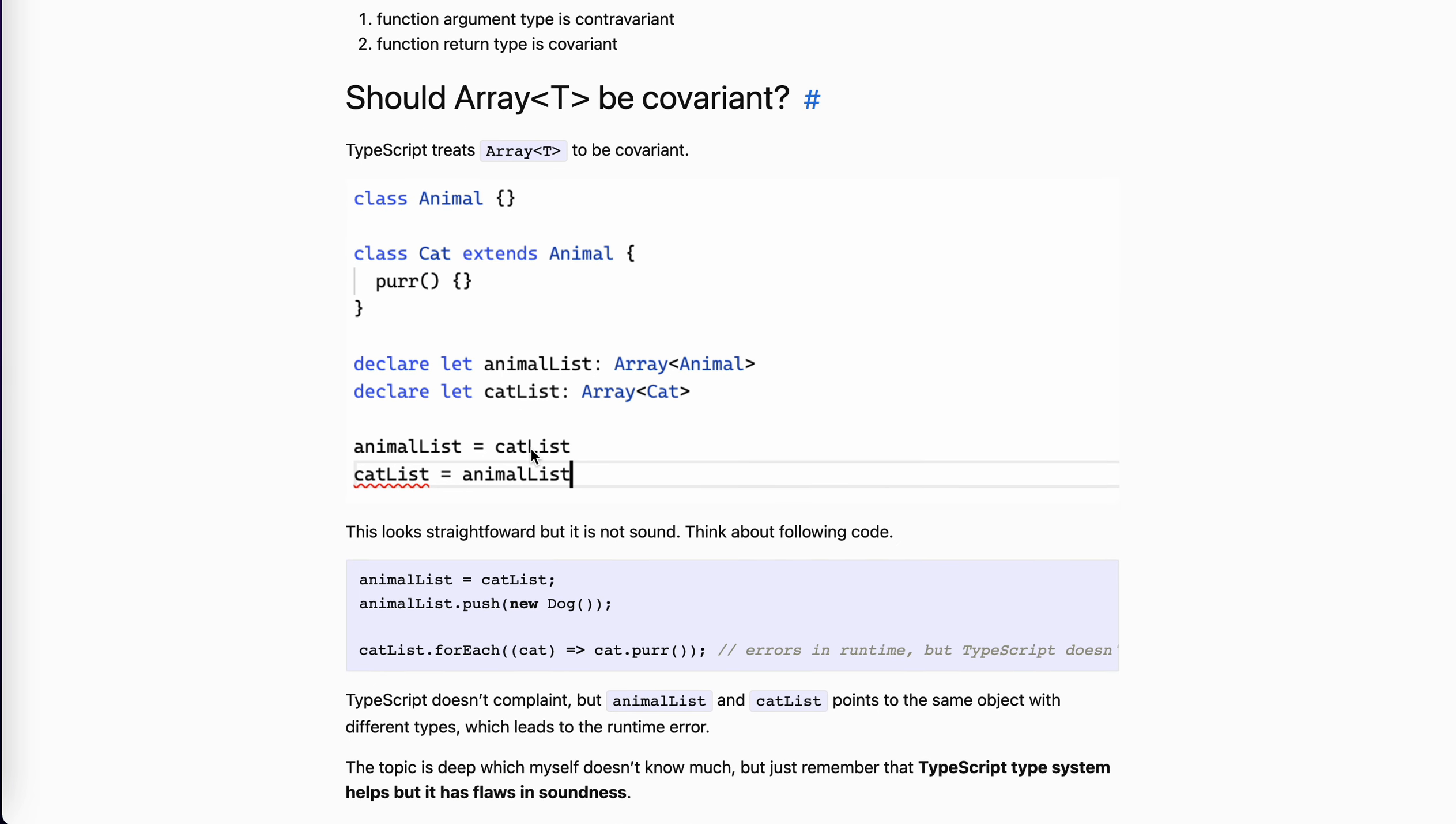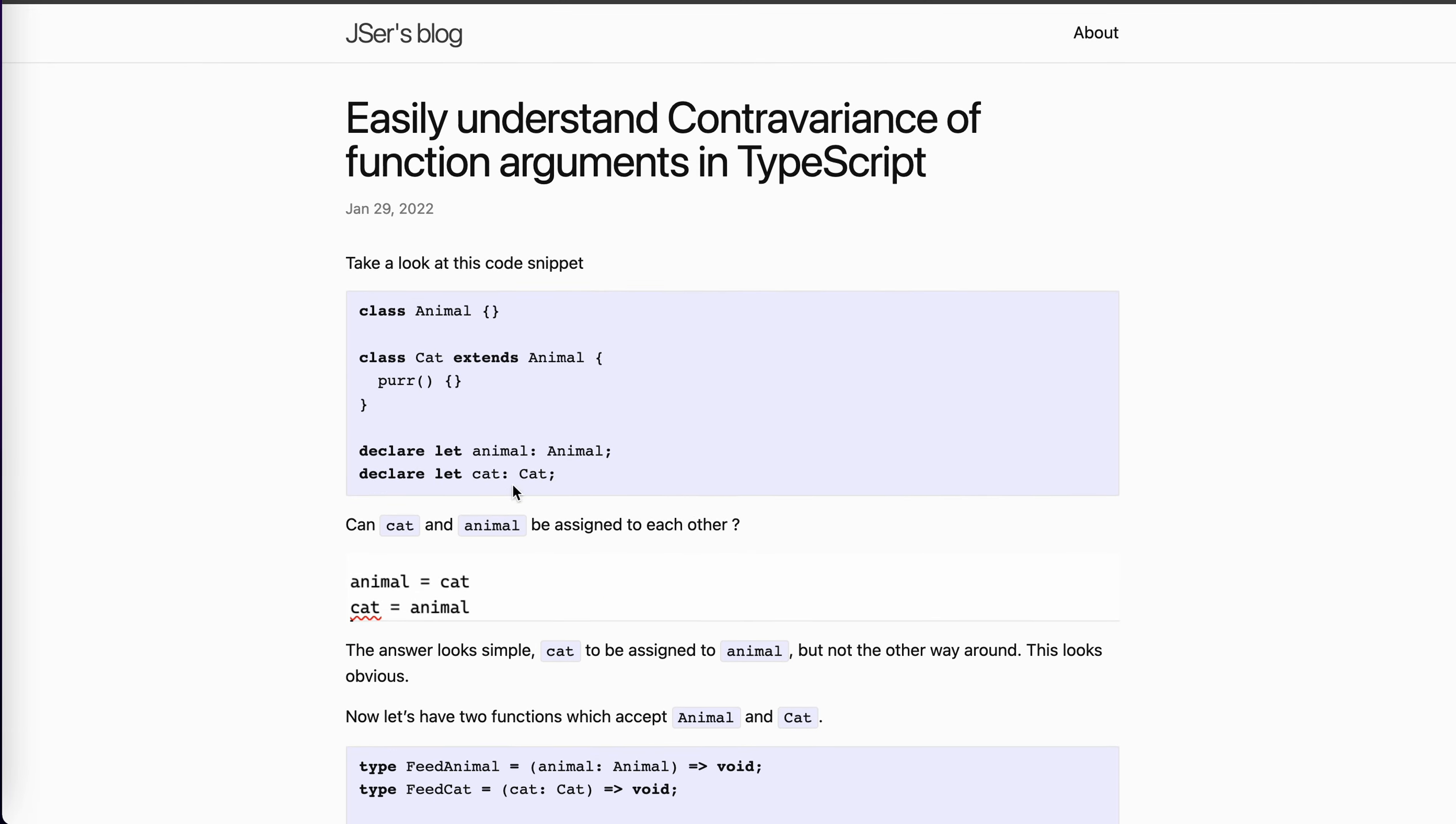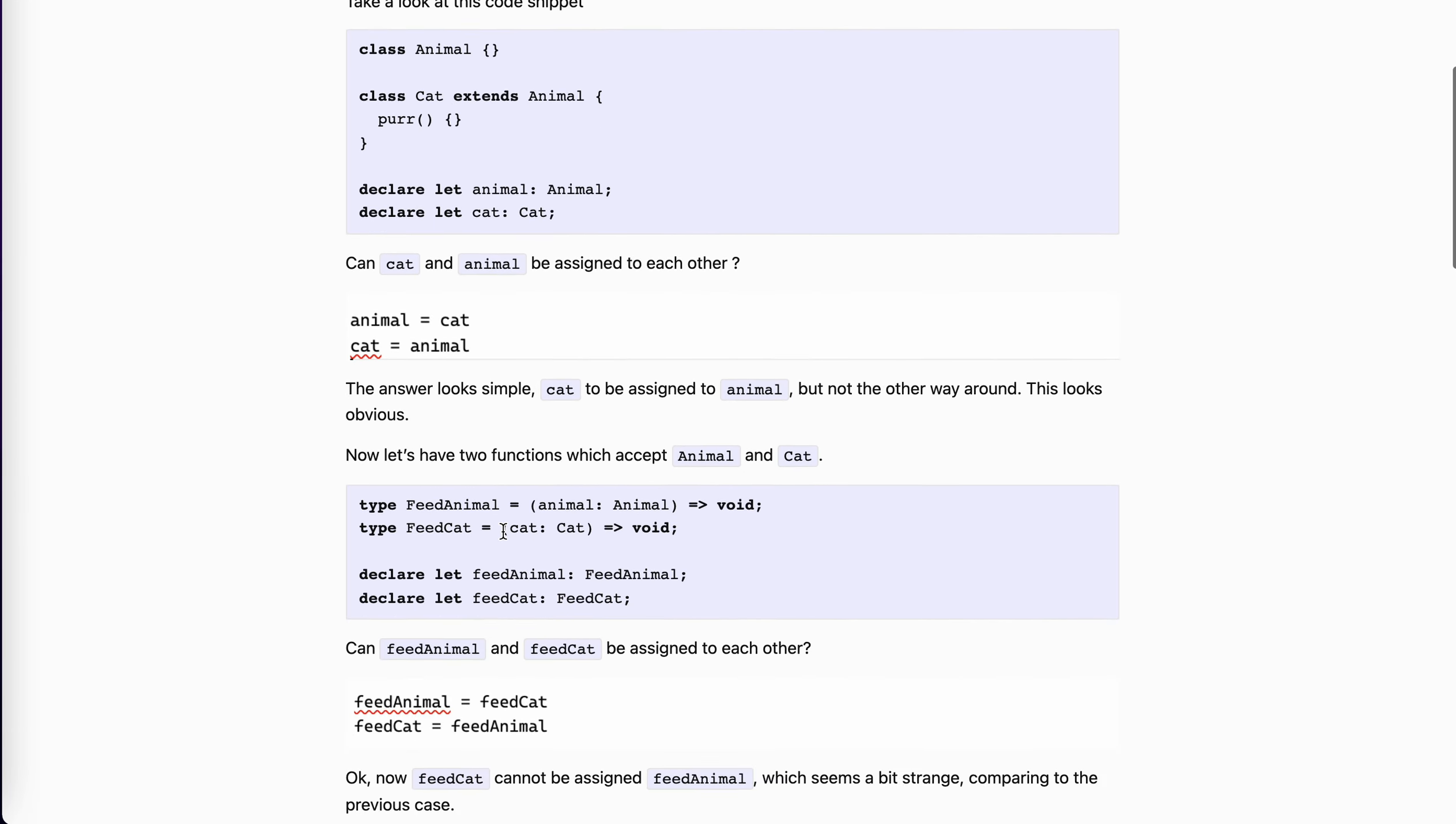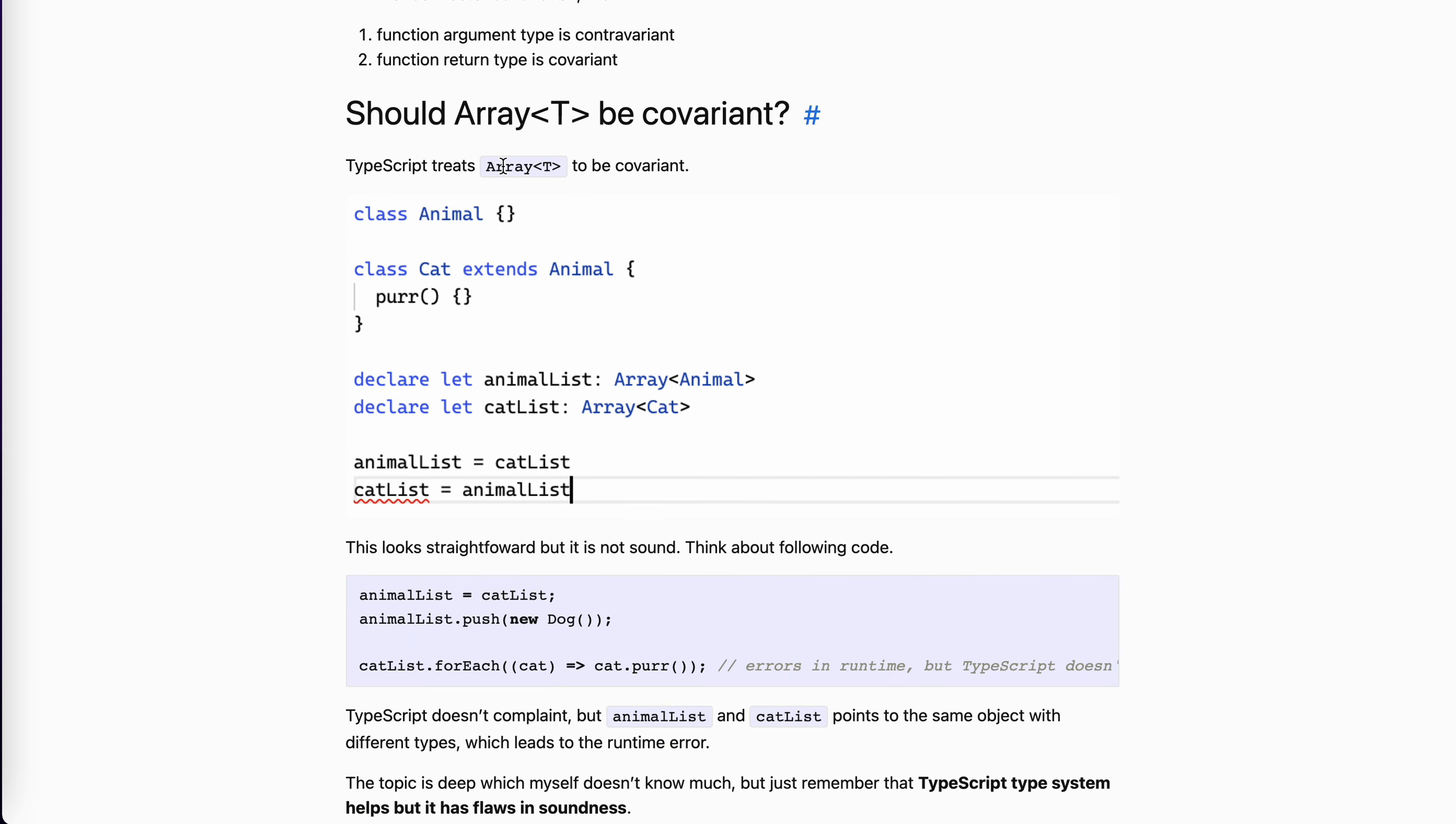We can assign catList to animalList, but animalList not to catList. You might think this is pretty straightforward, right? This is the same behavior as what you have for the first example. We assign cat with the animals. Yeah, so what do you mean? It means that array is covariant. Yeah, it's pretty good, but actually there's some problems in it.